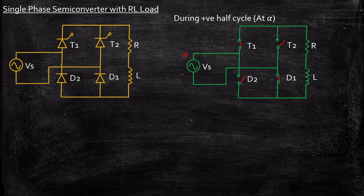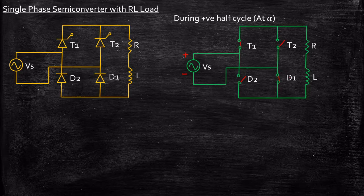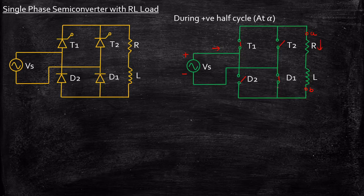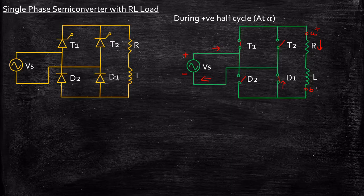During positive half cycle, the supply voltage will be plus and minus. Plus is connected to the anode of T1 and minus is connected to the cathode of D1. As a result, T1 and D1 will be forward biased because a firing pulse is applied at instant alpha for T1, and the current starts flowing from the source to the load through T1 — let's say this is A and this is B. The current flows through the load and back to the source through D1. So the output voltage is positive because plus is appearing at one terminal and minus at the other, so Vout will be equal to Vs.